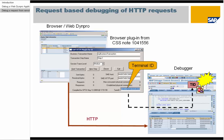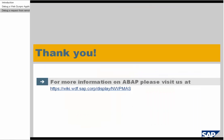Now you have seen how to debug GUI requests of a remote user. For request-based debugging of HTTP requests, there is also a possibility to transmit the Terminal ID by entering it in the special Terminal ID field of the browser plugin. This feature is available in the browser plugin since Service Pack 19. This was a demonstration of request-based debugging — you have seen how to debug external requests of a specific end-user, independent of application server and application server users. Thank you for your attention.